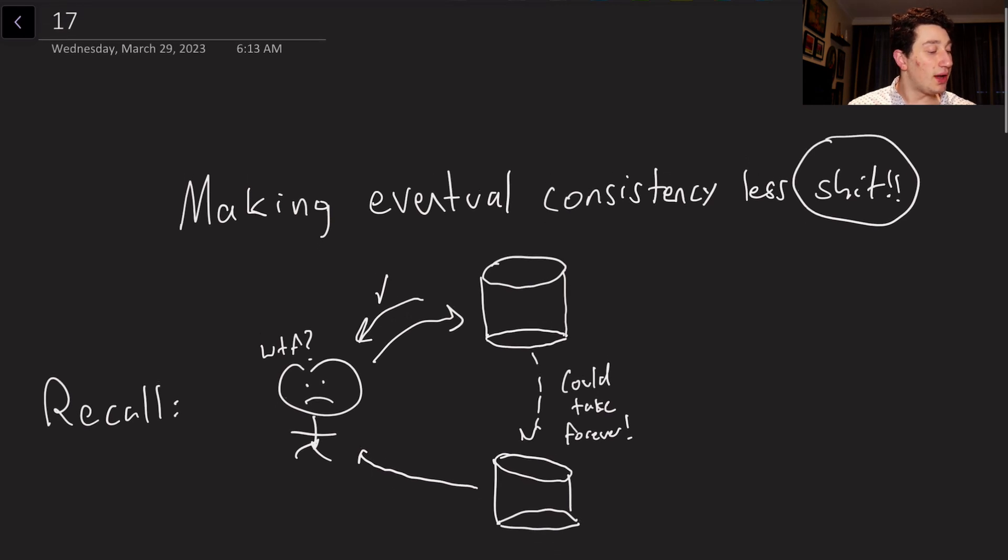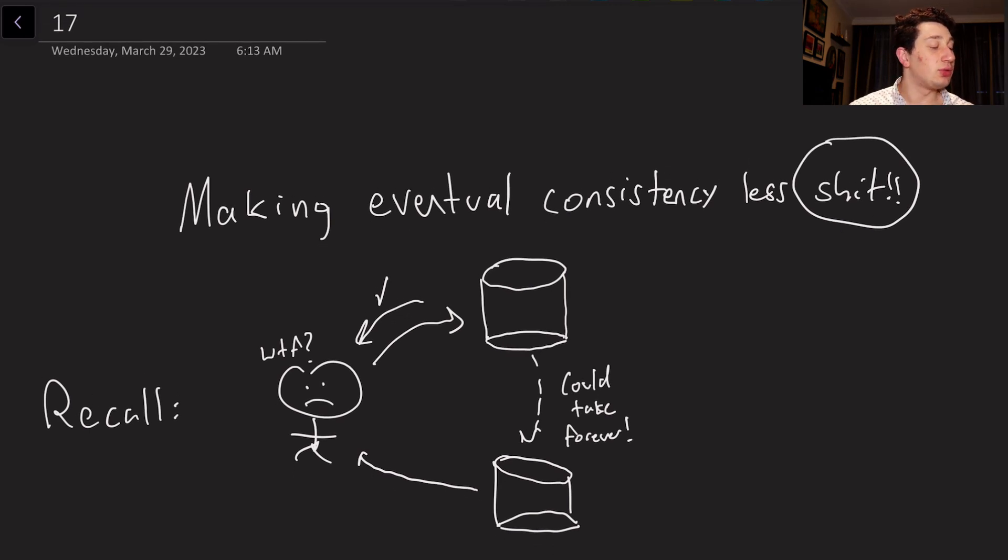So example number one is just kind of the base case of eventual consistency. Recall that basically we've got one client. He's going to go ahead and make a write to a database. He's going to receive an acknowledgement from that database that the write has gone through, and then he can go ahead and read from a replica, which effectively has no time limits on when it's going to receive the write. It could come in a day, it could come in a year, who knows?